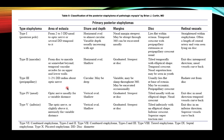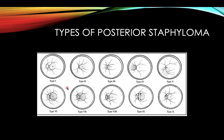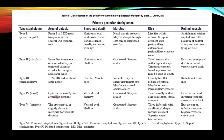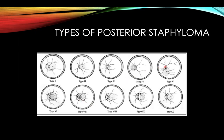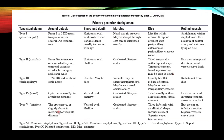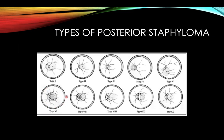Type 4 is the nasal type — opposite to Type 2 — extending from the optic nerve nasally for a variable distance. Type 5 is inferior to the disc, extending from the optic nerve or slightly above it inferiorly for a variable distance.